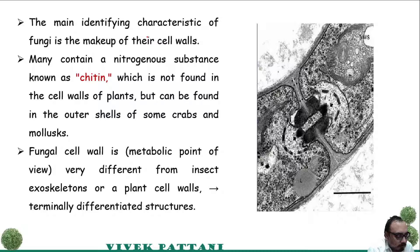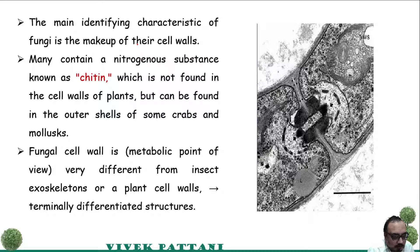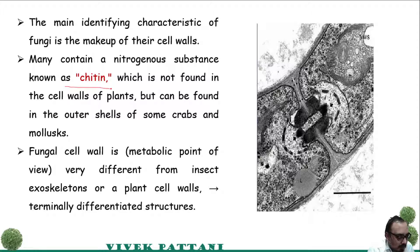One of the most important identification features of fungi is the makeup of the cell wall, which contains a nitrogenous substance called chitin. This chitin basically differentiates the cell wall of fungi from that of plants.